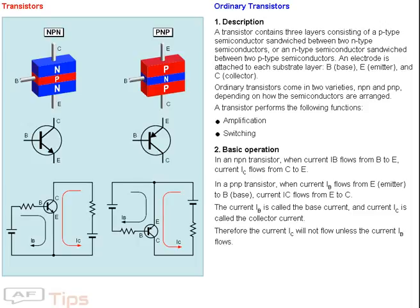base; E, emitter; and C, collector. Ordinary transistors come in two varieties, NPN and PNP, depending on how the semiconductors are arranged.